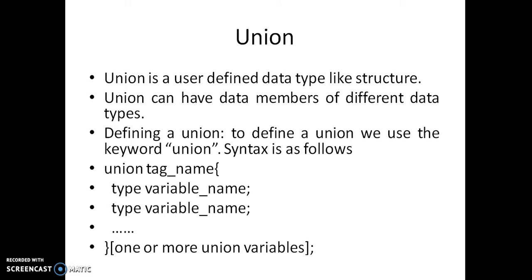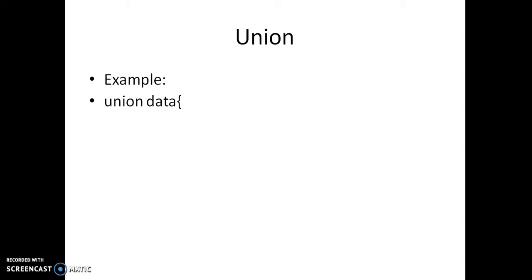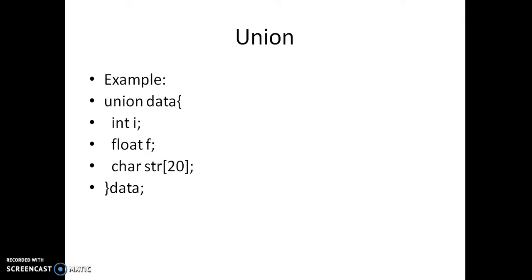Before the semicolon we can declare variables of the union — this is optional. For example, we declare a union named 'data' with members: int i, float f, and char str[20], and create a variable named data. This looks exactly like a structure so far. To define a structure we use the keyword struct; to define a union we use the keyword union. Both can have members of different data types.